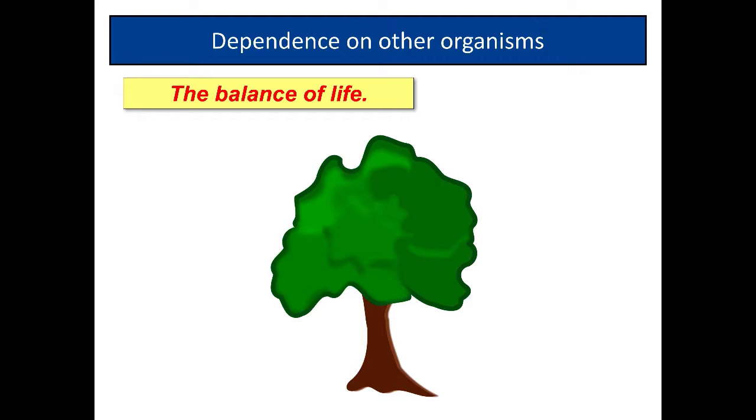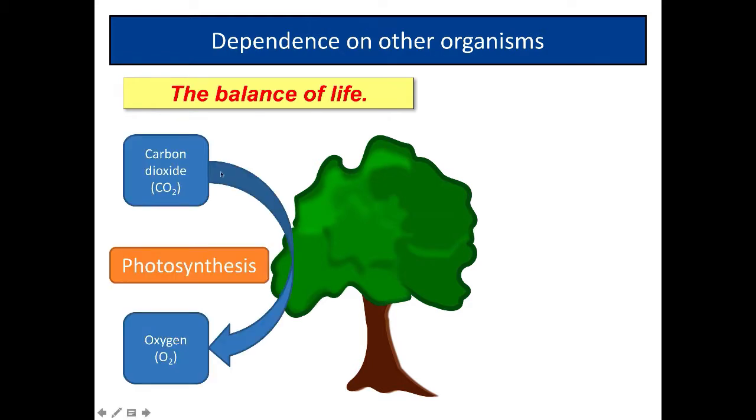So we're going to discuss what we call the balance of life. Let's recap photosynthesis: carbon dioxide gas is converted into oxygen. Only plants can do this. There's another reaction that all organisms do, and that's called respiration.